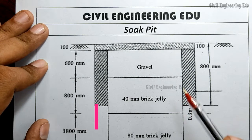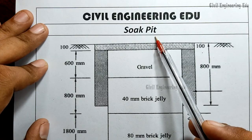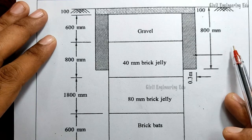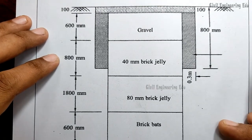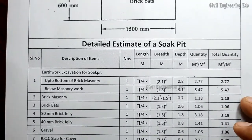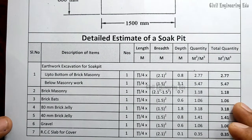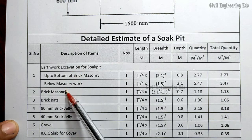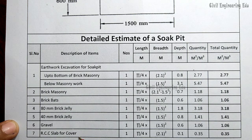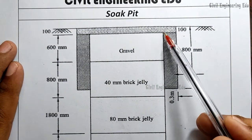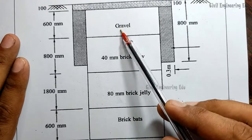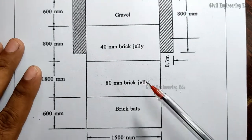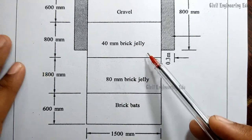Hello all, welcome to Civil Engineering Education. In this video we are going to discuss the estimate of a soak pit. This is the figure of a soak pit — we construct these in almost every house. This is the soak pit section and we are going to estimate it. The table of detailed estimate covers different items: earthwork excavation, brick masonry for sidewalls, brick bats, 80mm jelly, 40mm jelly, gravel, and RCC slab for cover. You can see the top cover slab, brick masonry walls, and different fill zones.